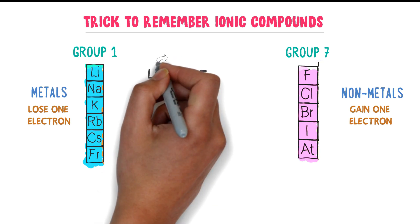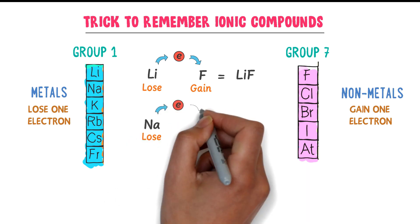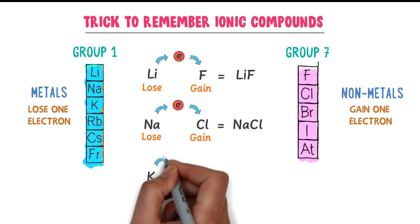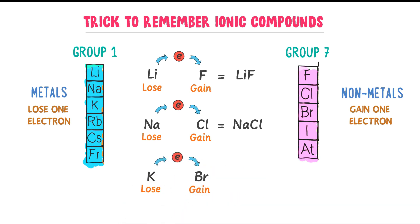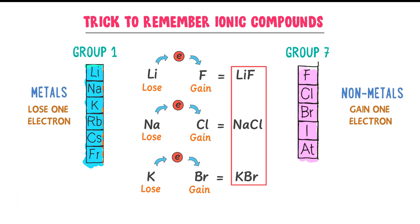Lithium loses an electron and fluorine gains an electron to form lithium fluoride. Secondly, sodium from metals and chlorine from non-metals — sodium loses an electron and chlorine gains an electron to form sodium chloride. Thirdly, potassium from metals and bromine from non-metals — potassium loses an electron and bromine gains an electron to form potassium bromide. Thus lithium fluoride, sodium chloride, and potassium bromide are all ionic compounds.